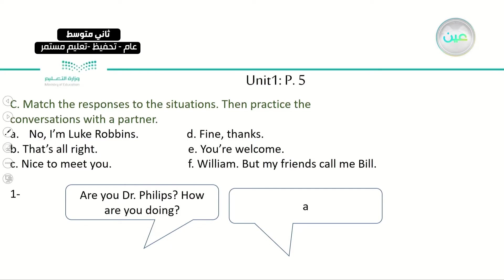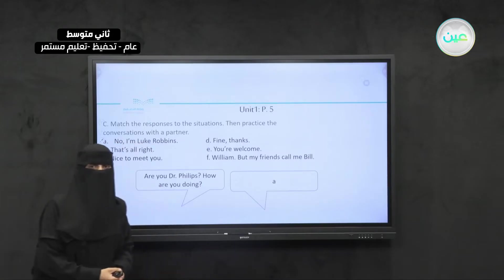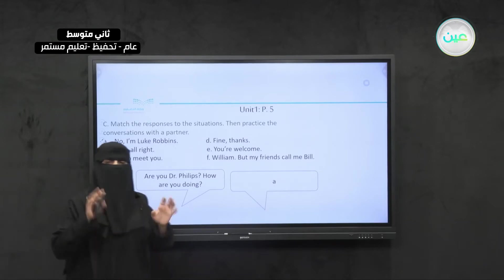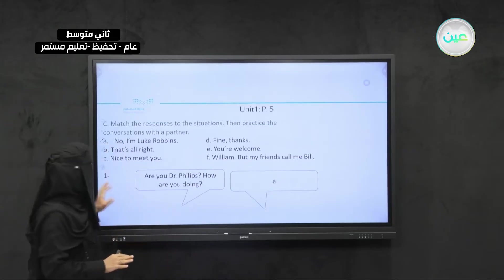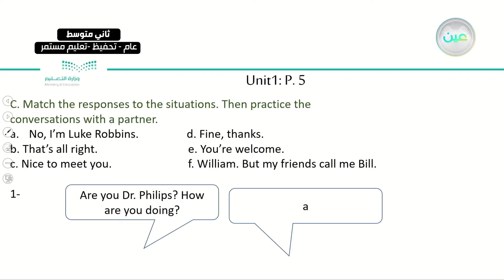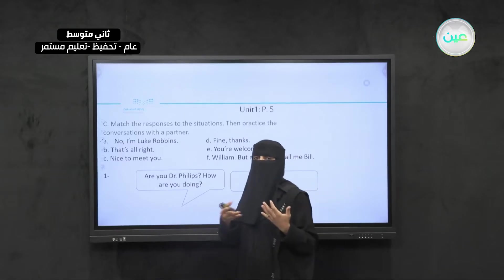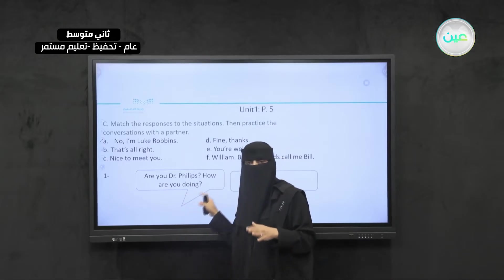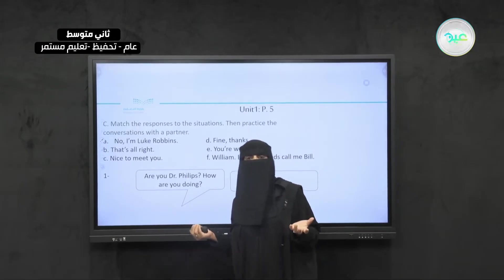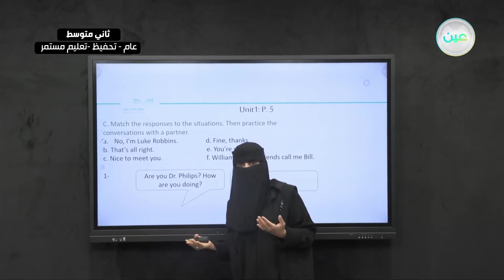Here, on your book, page 5, we have another part related to grammar — Exercise C. You have different pictures of people talking to each other. Match the responses to the situations, then practice the conversation with a partner. This is grammar and also speaking practice. When you finish this exercise, have five minutes practicing the conversation with a partner.